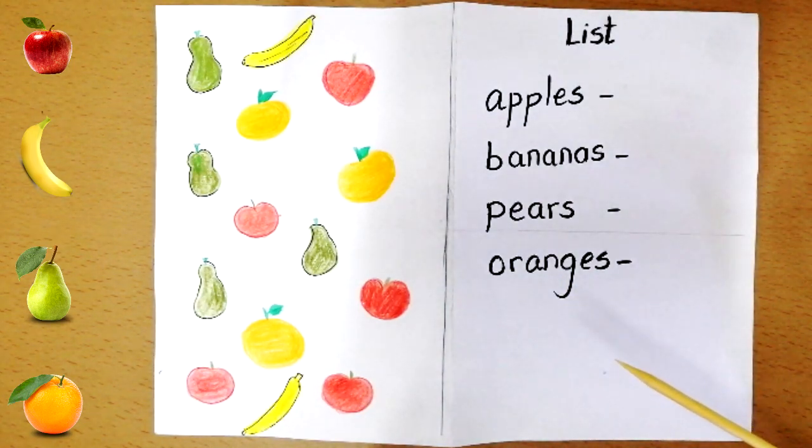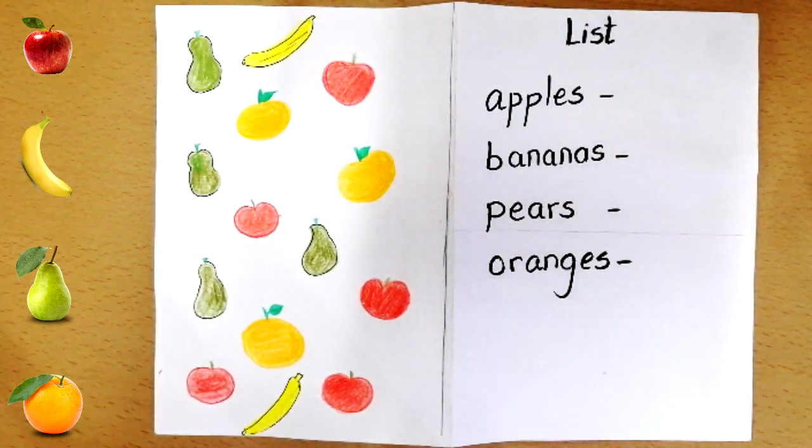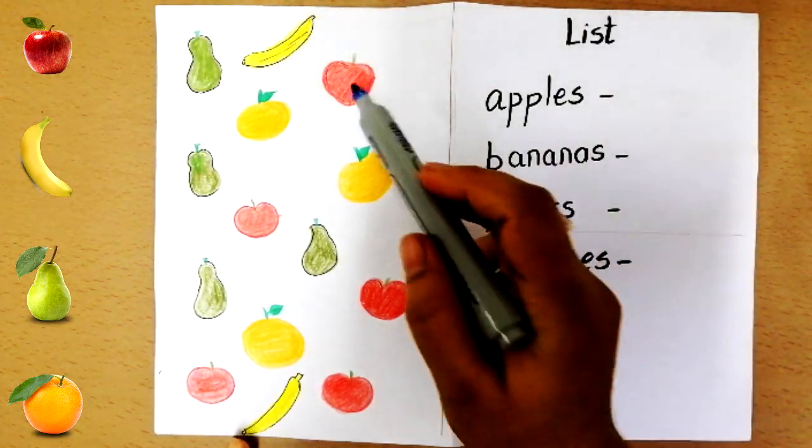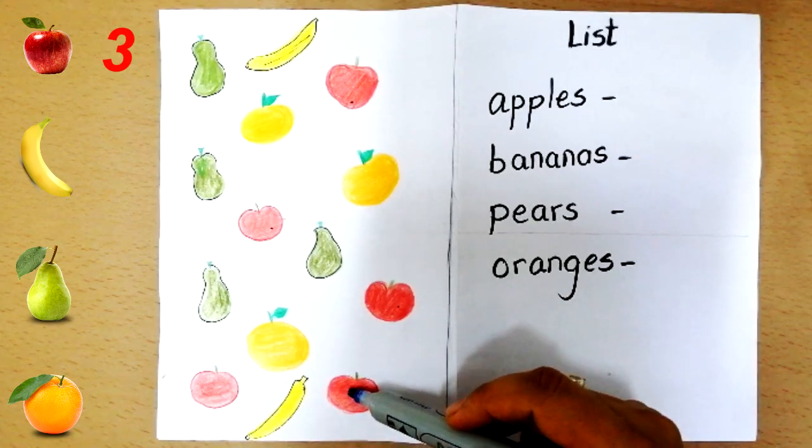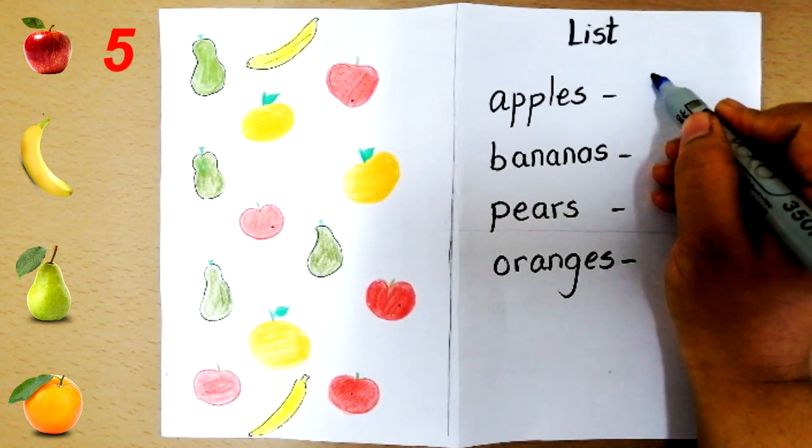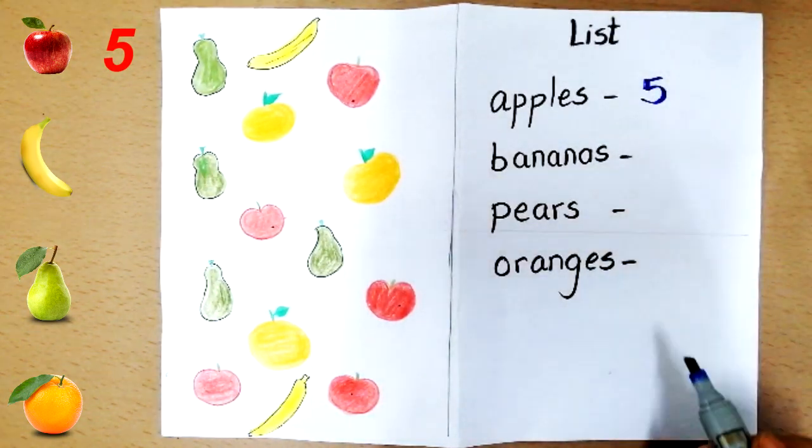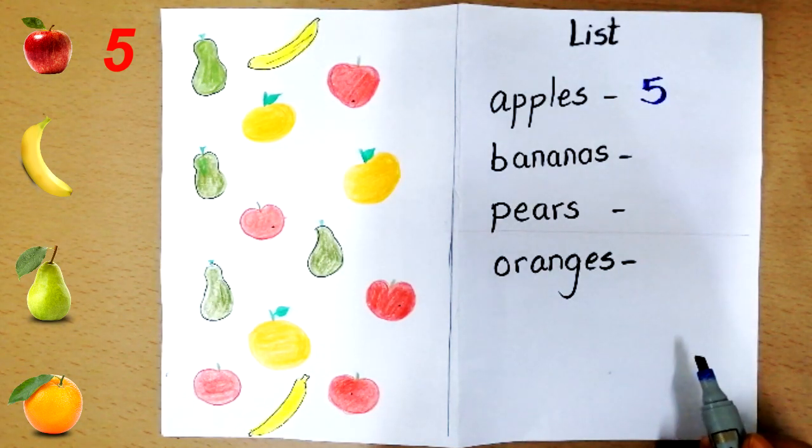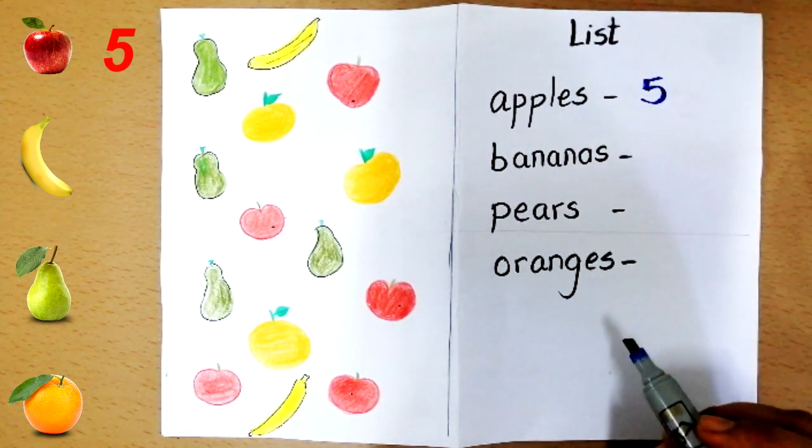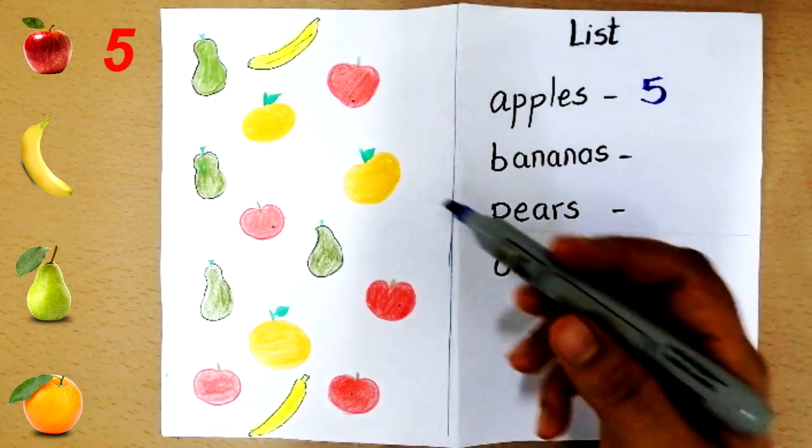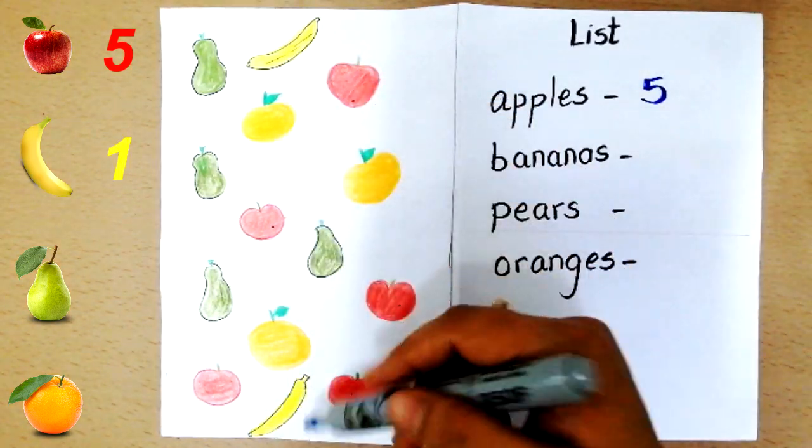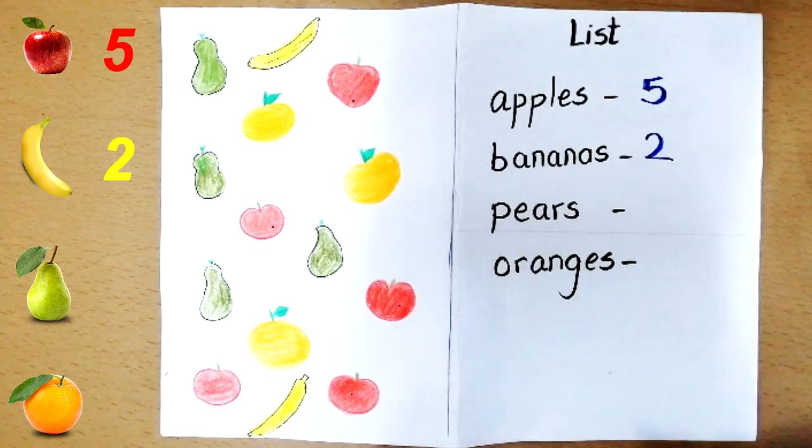Let's count how many apples you need. You need one, two, three, four, five, so you need five apples. The second fruit in the list is banana. Let's count: one, two. So you need two bananas.